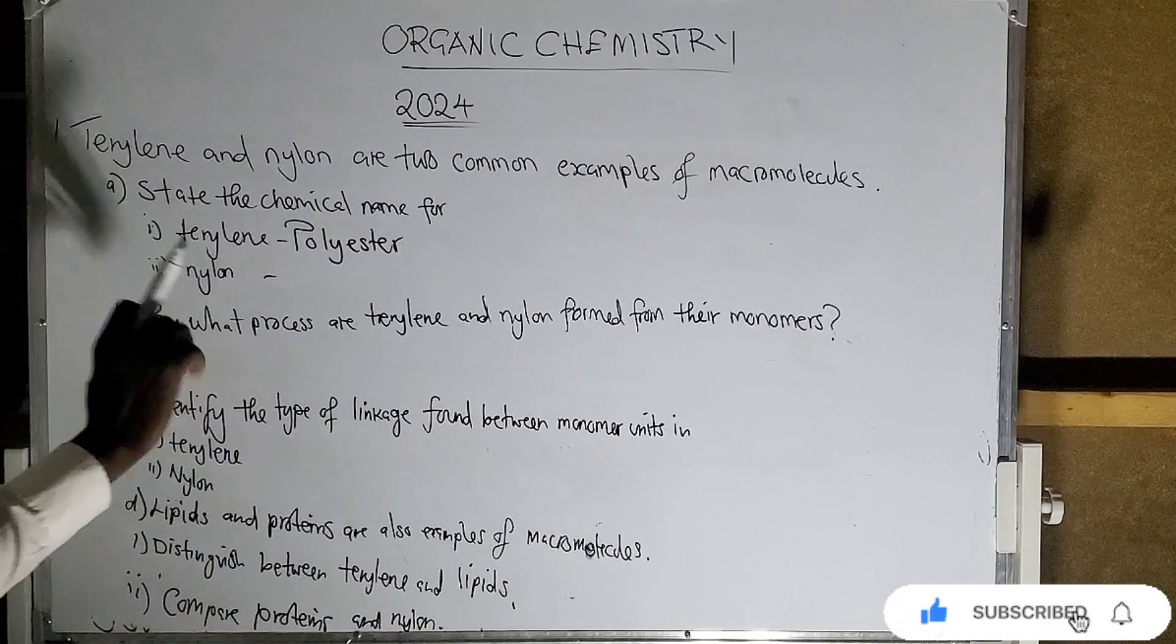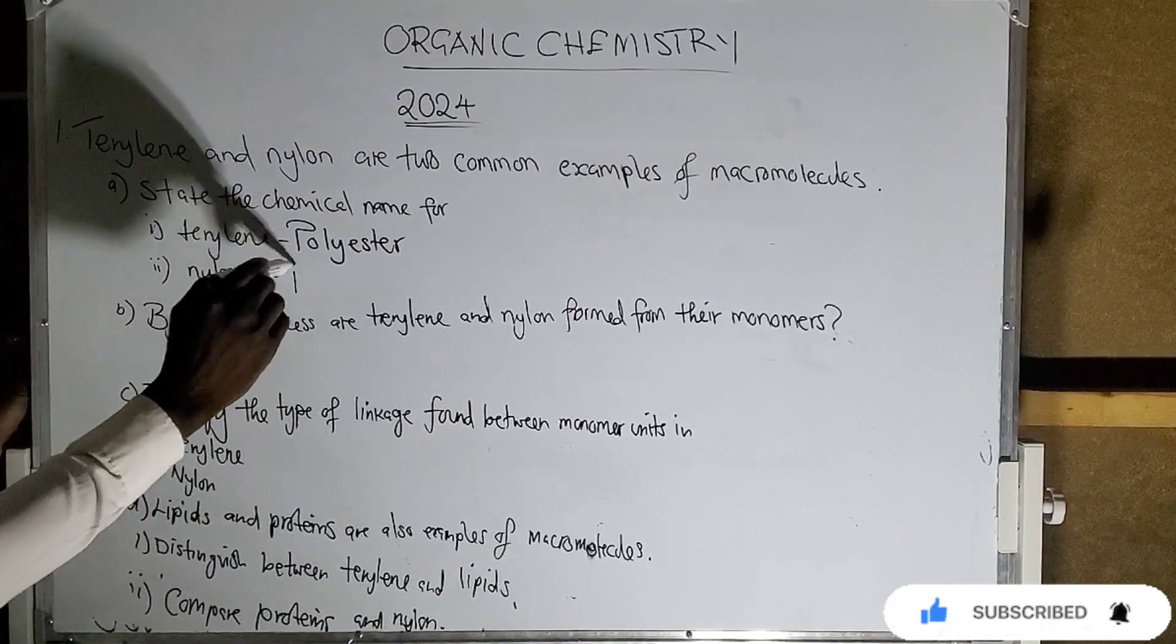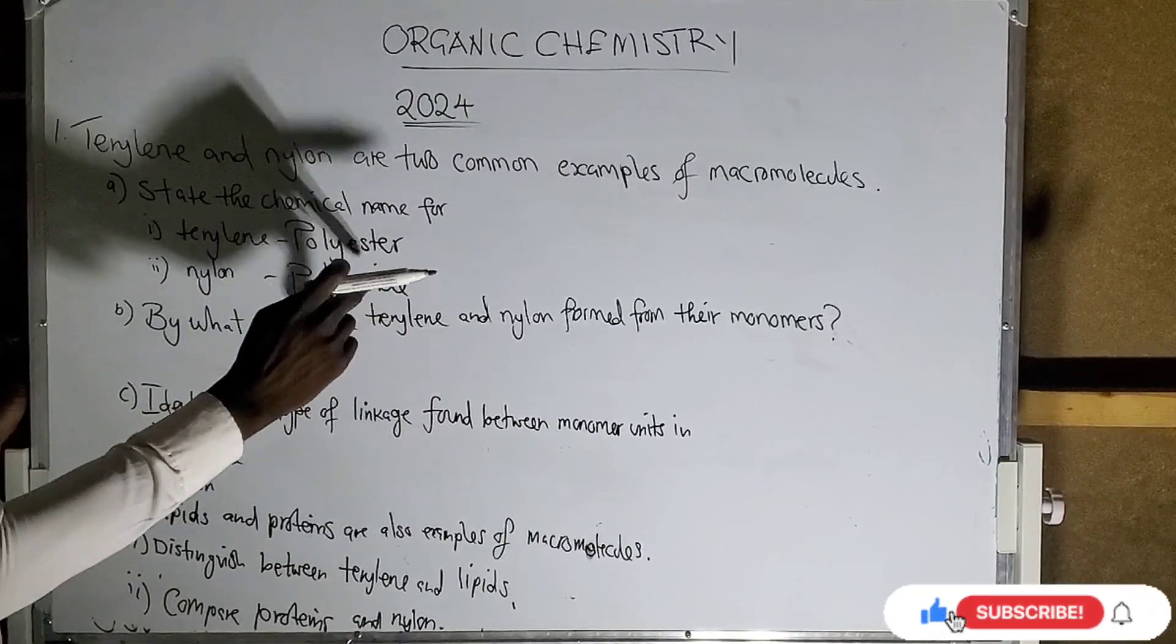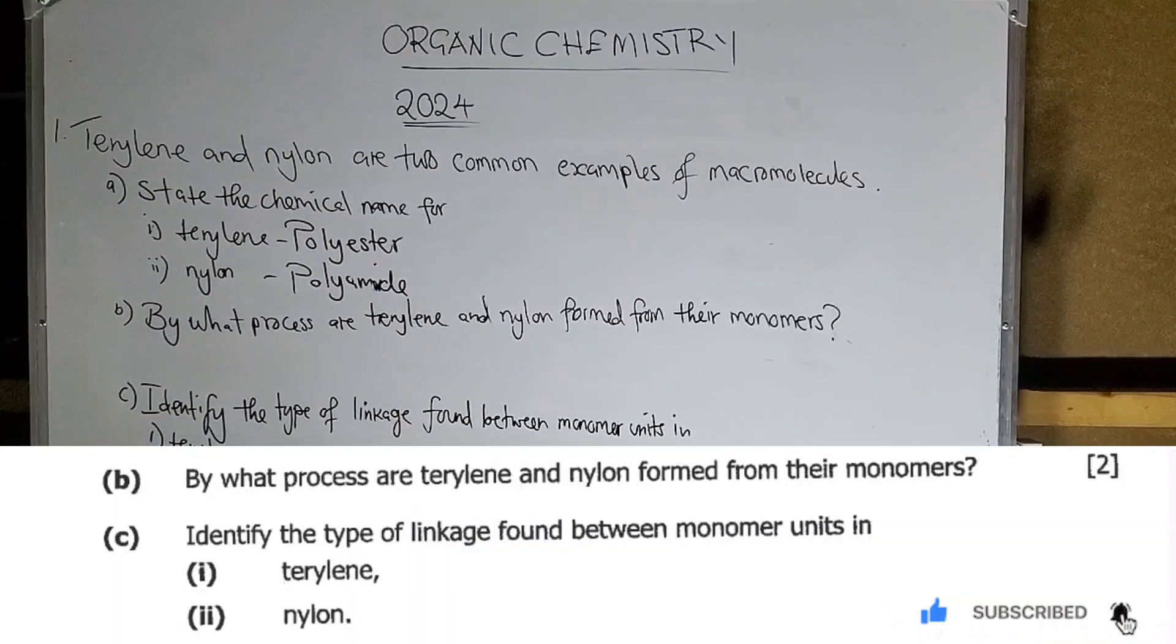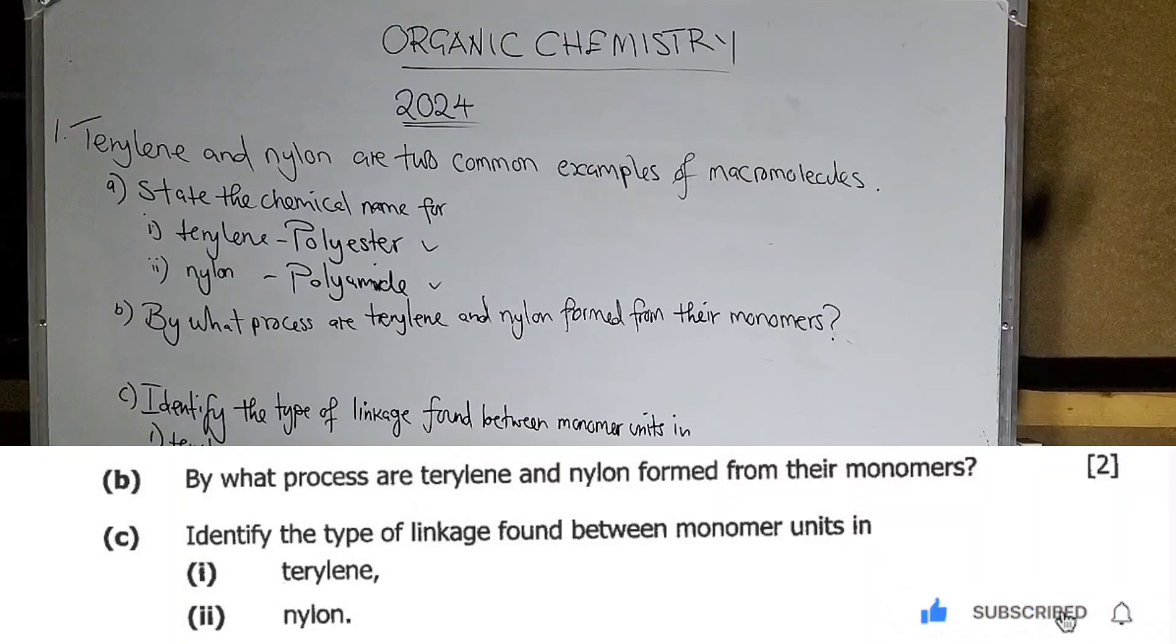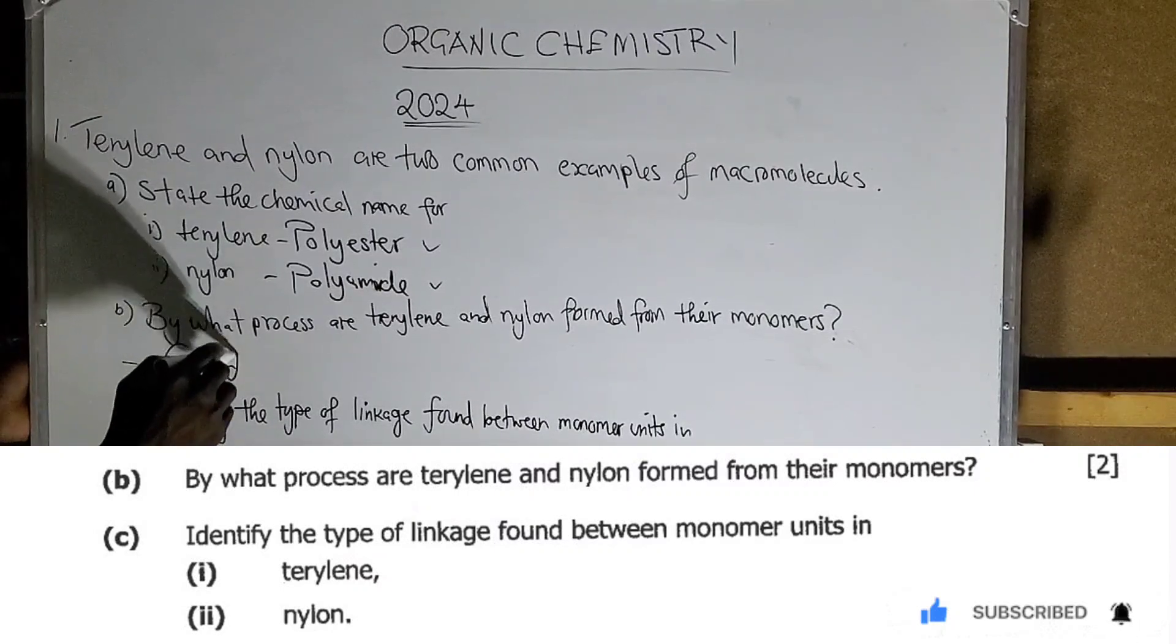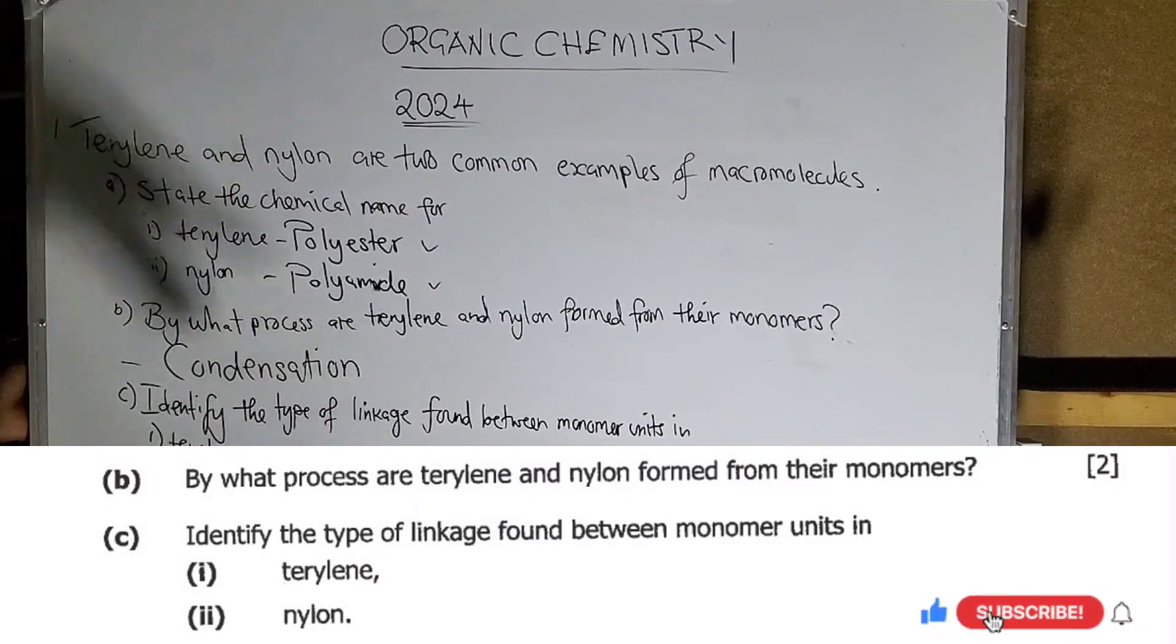Now, the chemical name for Terylene is polyester. The chemical name for Nylon is polyamide. We are safe. We're done with the first two. Let's go to B. By what process are Terylene and Nylon formed from their monomers? I've already explained this. This is by condensation.